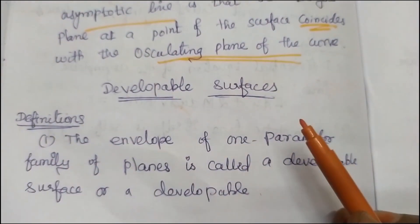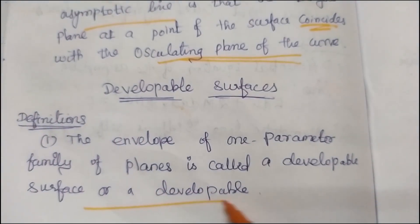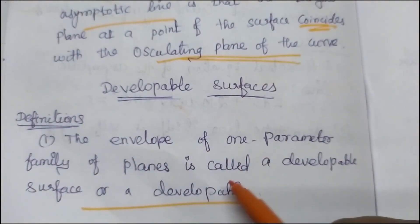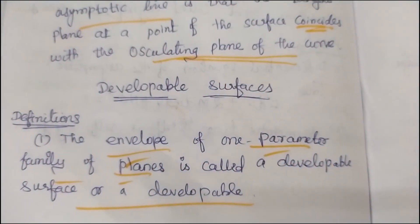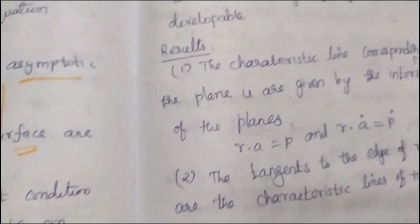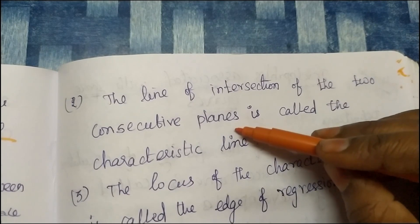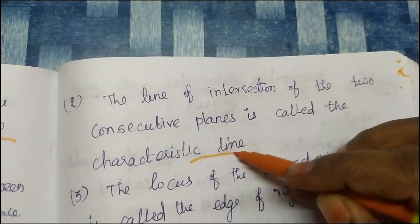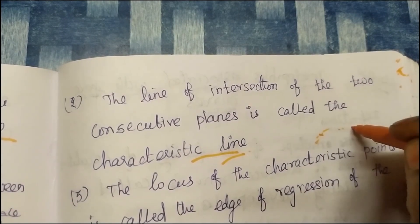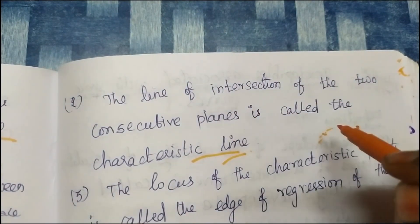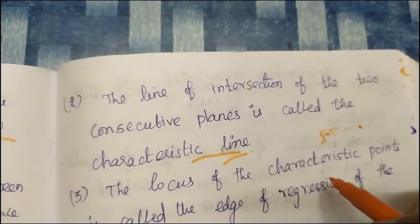What is the developable surface? The envelope of a one-parameter family of planes is called a developable surface or a developable. The line of intersection of two consecutive planes is called the characteristic line. Characteristic line is the line of intersection of two consecutive planes.